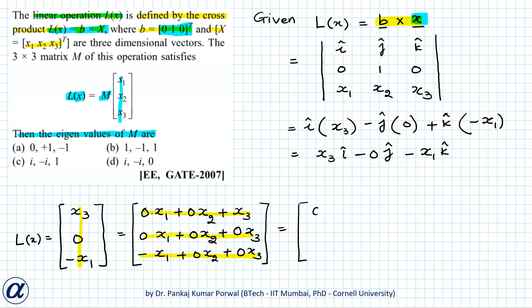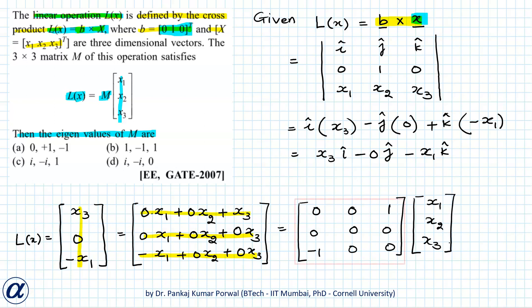That gives us our pre-multiplying matrix M as: first row (0, 0, 1), second row (0, 0, 0), third row (-1, 0, 0). This matrix M is our matrix M, and note that the matrix M is skew-symmetric.